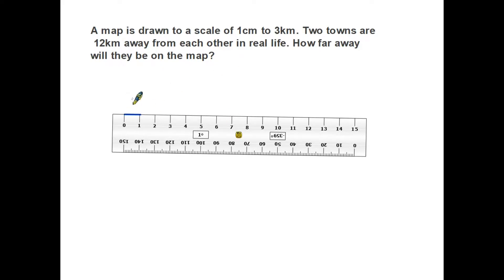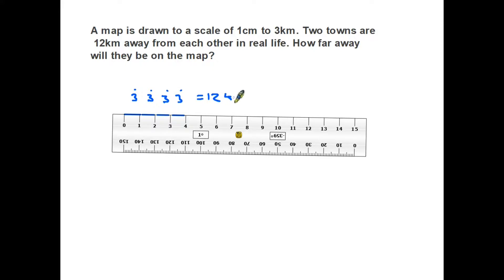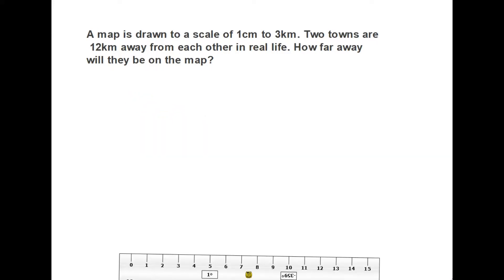Looking at the scale on the ruler, we know that one centimeter is three kilometers. So the first centimeter is three, the second gives six, the third gives nine, and the fourth centimeter gives three more — so three plus three plus three plus three equals 12. There's your 12 kilometers — on the map, that's one, two, three, four centimeters.